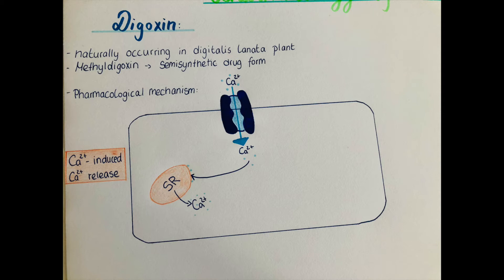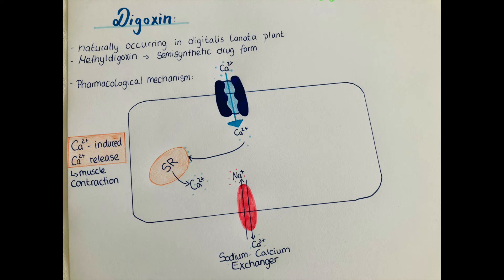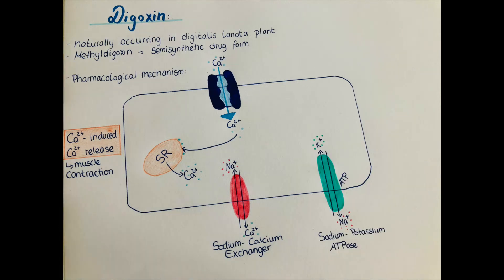The cytosol now has a major increase in calcium levels, and this will lead to muscle contraction of the muscle cells. Normally after this happens, calcium will be released out of the cell through a sodium-calcium exchanger that pushes three sodiums into the cell in exchange for one calcium out of the cell. This results in a lot of sodium within the cell, and the way sodium is then removed is through the sodium-potassium ATPase pump.